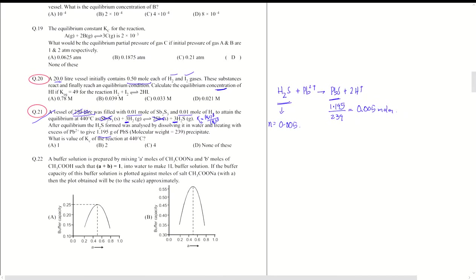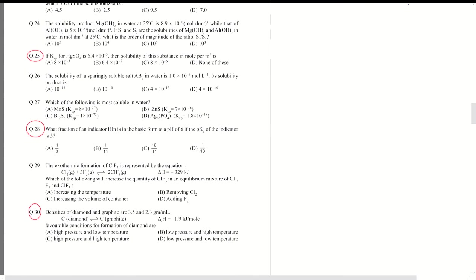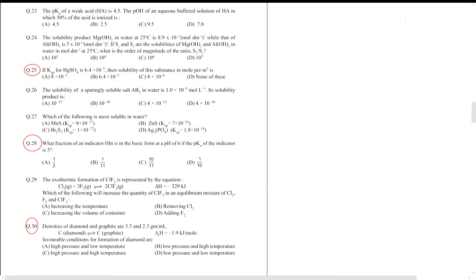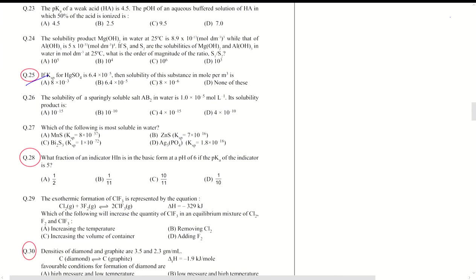I can just write this part: 3H2 leads to 3H2S. Initially this was 0.01 moles, and at equilibrium this has become 0.005. So this must have also decreased by the same value, and this is also 0.005. The value of Kc is 1.